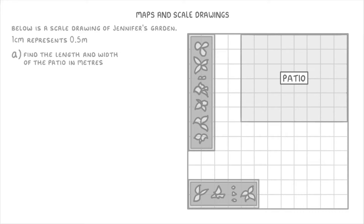Let's try a slightly different one this time. In this question, we're told that the image below is a scale drawing of Jennifer's garden, where each centimetre on the diagram represents 0.5 metres in the real world. For part A, we're being asked to find the area of the patio in square metres. You might have noticed that they've done this drawing over a grid, and they actually do this quite a lot in exams, where each square is often 1 centimetre by 1 centimetre, which makes it easier to measure distances. However, the squares could also be different sizes, so it's always worth checking with a ruler.